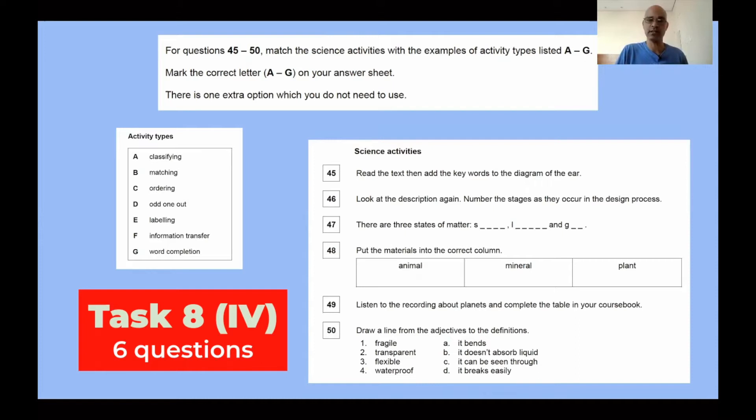And it contains six questions. Let's move on and see what the question looks like. For questions 45 to 50, match the science activities with the examples of activity types listed A through G.